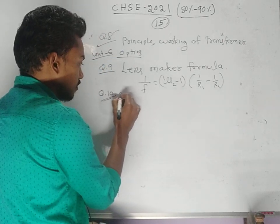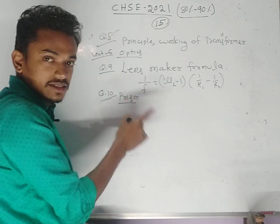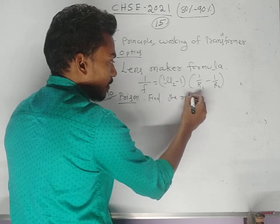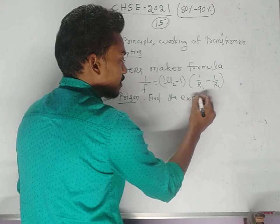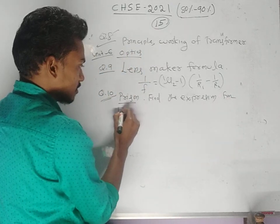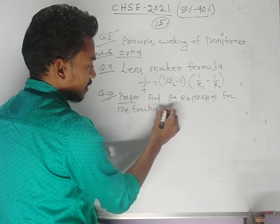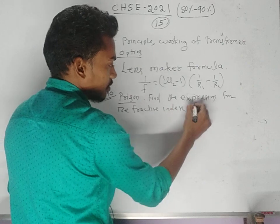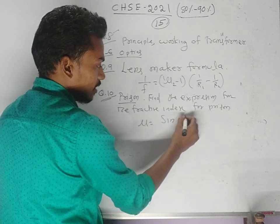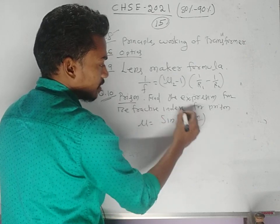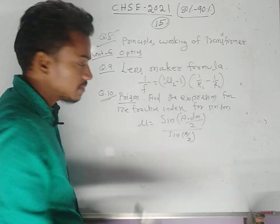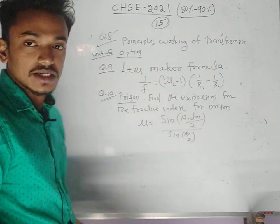Question number ten from optics: refraction through a prism — find the expression for the refractive index of a prism, that is μ = sin((A + dm)/2) / sin(A/2), where A is the angle of the prism and dm is the angle of minimum deviation.